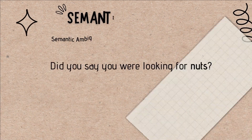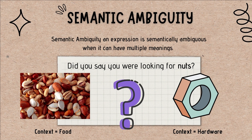Third, coming to semantic ambiguity — a semantic expression is semantically ambiguous when it can have multiple meanings. For example, in the sentence 'did you say you were looking for nuts,' the context of the first person might be food, while another person could misunderstand and interpret 'nuts' as hardware nuts.